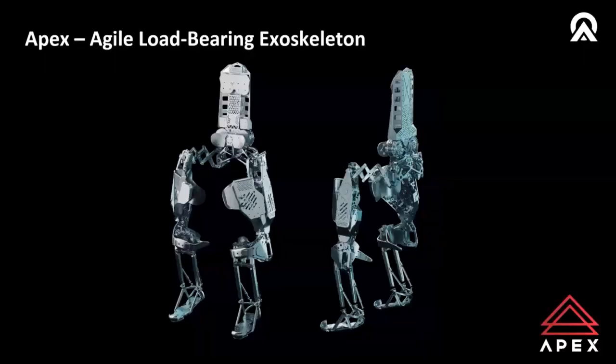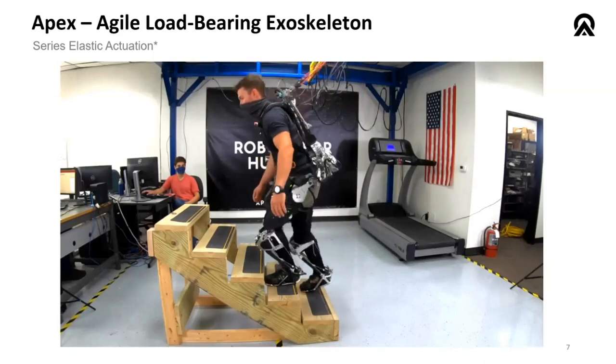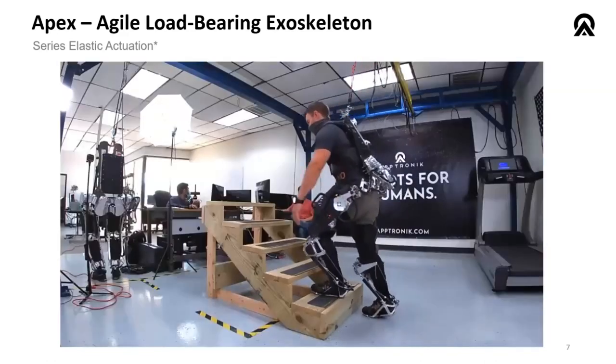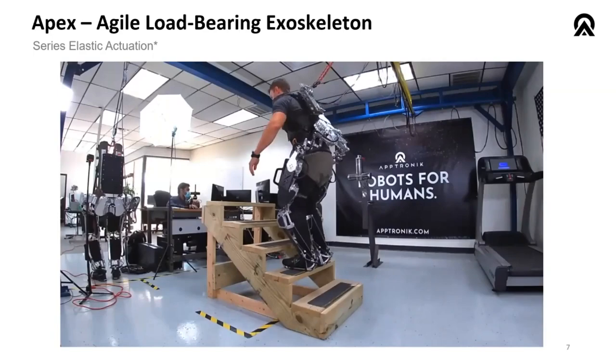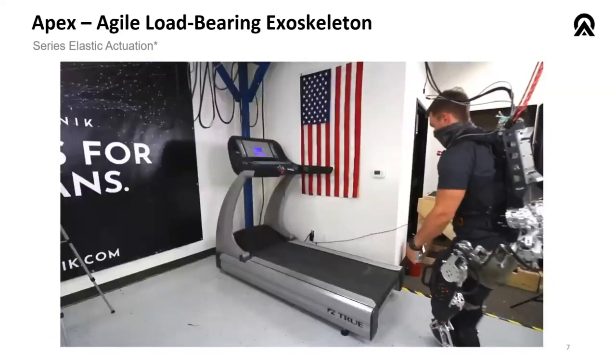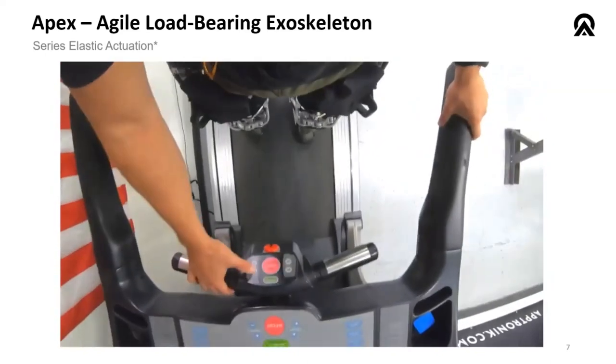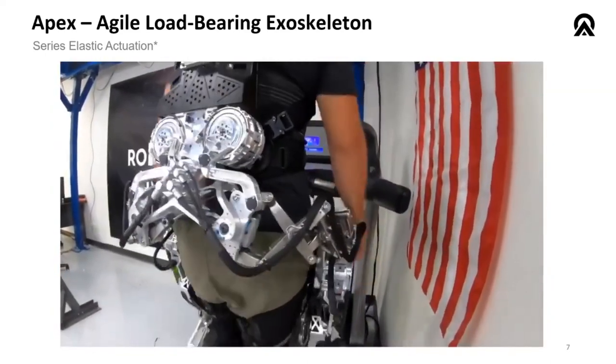Apex is an agile load bearing exoskeleton that we designed as part of the TALIS program with the US government. This was intended for able body operators operating in mission critical scenarios. And like the prior system that I just talked about, this robot is also very tightly coupled to humans. And so human robot interaction is really important to consider from a design standpoint. There's a number of different actuators in this system, but there's a majority of them which are series elastic, which is really key for this kind of high fidelity force control and low impedance interaction.